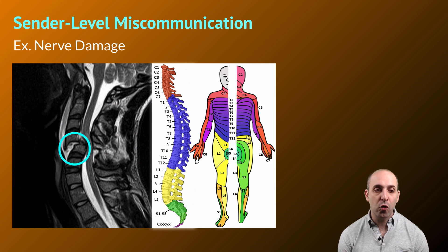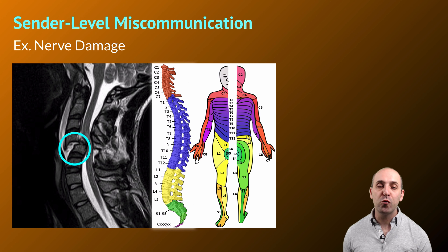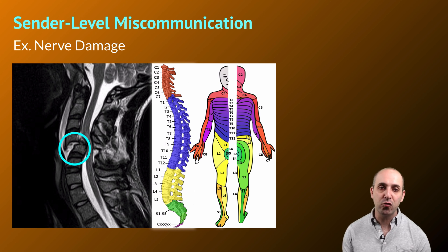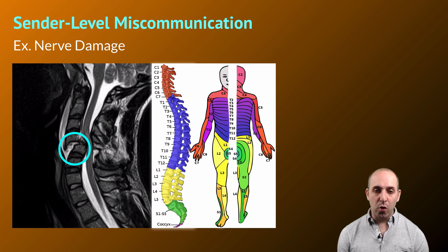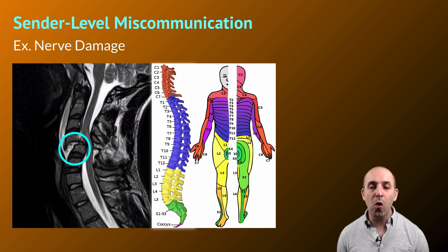This is an x-ray of a spinal cord break. This has resulted in paralysis in the individual in which this has occurred. The spinal cord is the connection point between our peripheral nervous system and our central nervous system. The different nerves from our body enter into our central nervous system in the different vertebrae of our spinal cord, as shown in this map connecting body segments to their respective vertebrae.